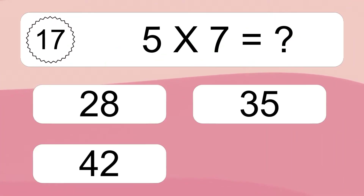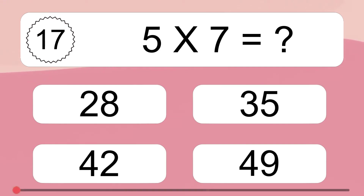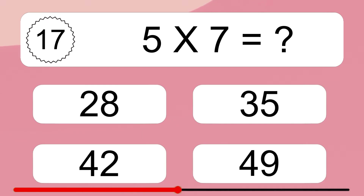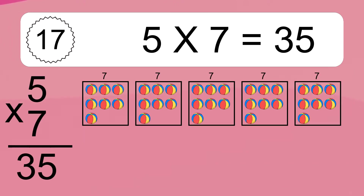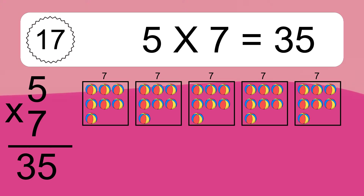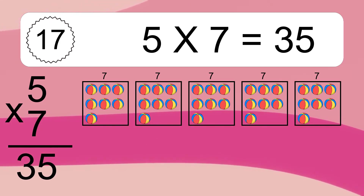5 times 7 equals what? 5 times 7 equals 35. We have 5 boxes and each box has 7 colorful balls inside. If you count all the balls in all the boxes together, you will have 5 times 7 balls. This equals 35 balls.